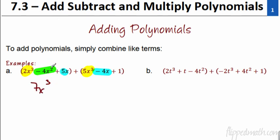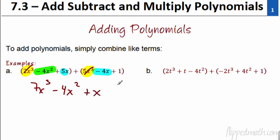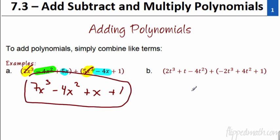So when we add all these together, we get 2x to the third plus 5x to the third — that's 7x to the third. Then we have to go in descending order, going down the exponents from the third power down to the second power. There's only that one negative 4x squared. Then we go to the x to the first powers: 5x minus 4x, or 5x plus negative 4, that's just a positive 1x, and then we have plus 1. So here's the answer for the first one — easy enough. Let's look at b.